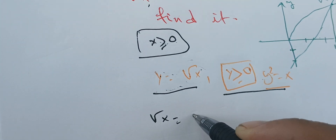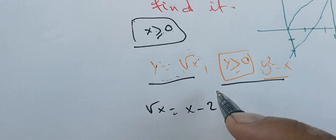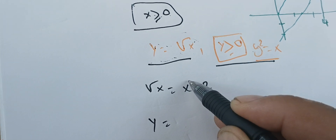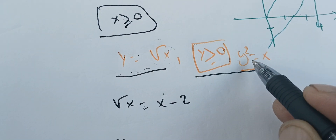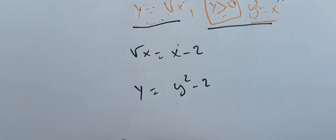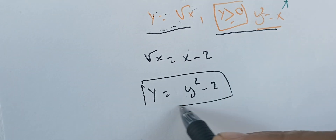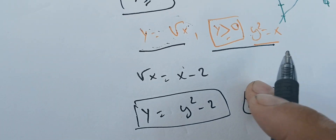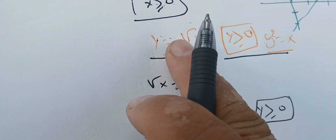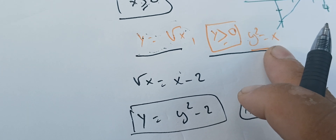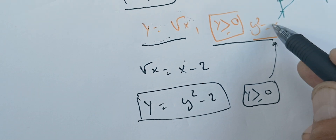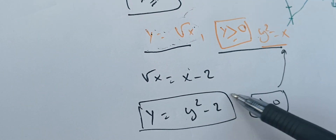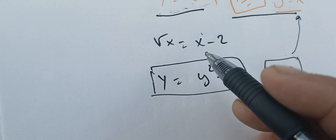Our original equation is: the square root of X equals X minus 2. Now substituting, the square root of X becomes Y, and X becomes Y squared. So the equation becomes Y equals Y squared minus 2. We solve this equation under the condition that Y is greater than or equal to 0, then use Y to recover X.